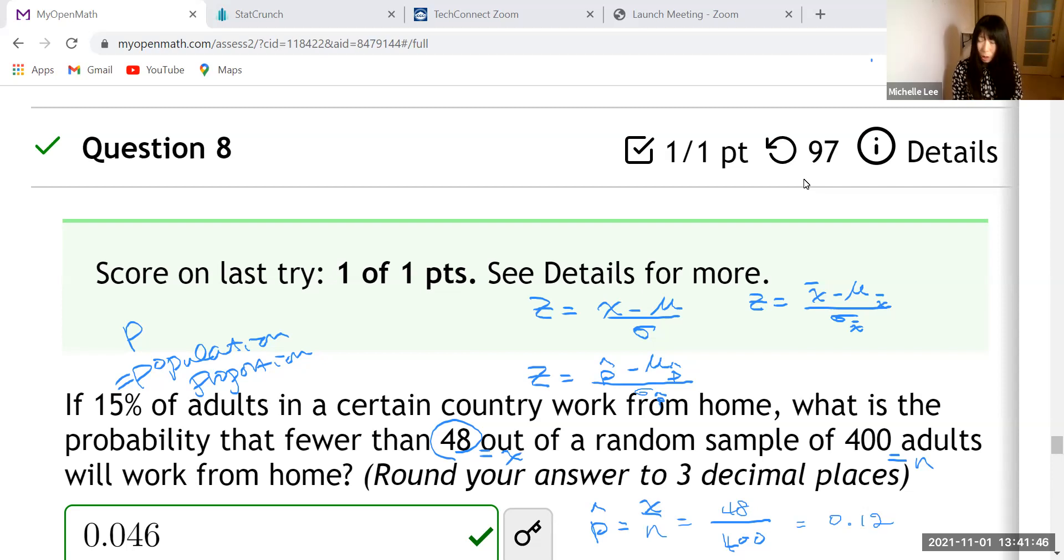Now, we should know what's the mu sub p hat. Mu sub p hat, which is p. Then sigma sub p hat, we should know that sigma sub p hat, which is square root p times 1 minus p over n. Then inside the square root p was 15%, which is 0.15, 1 minus 0.15 over n, which is 400.